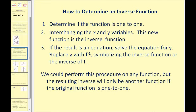Next, let's talk about how we determine an inverse function. First, we have to determine if the function is one-to-one. If it's not one-to-one, it will not have an inverse function. Step two: interchange the x and y variables — this new function is the inverse function. If the result is an equation, we need to solve for y, then replace y with our inverse function notation. The resulting inverse will only be another function if the original function is one-to-one.